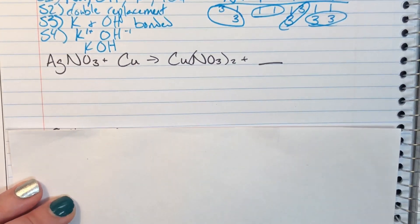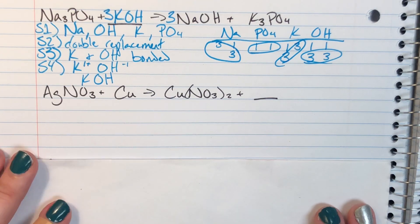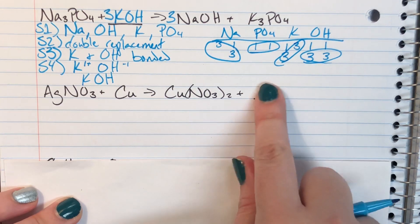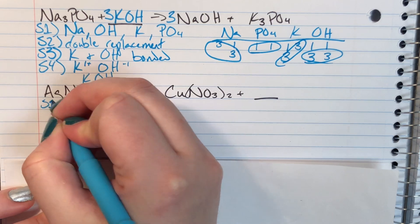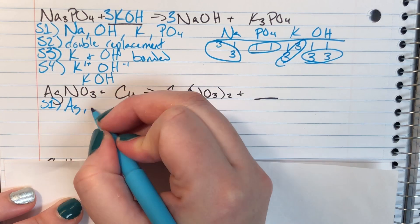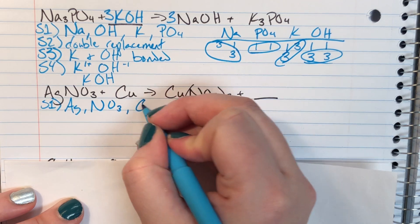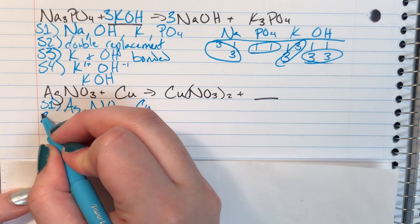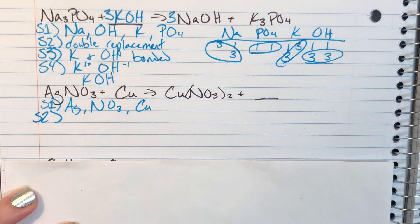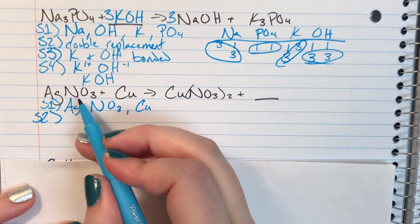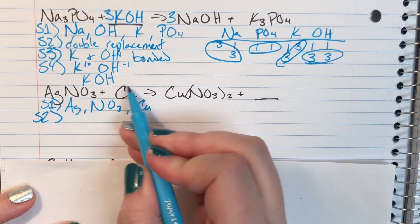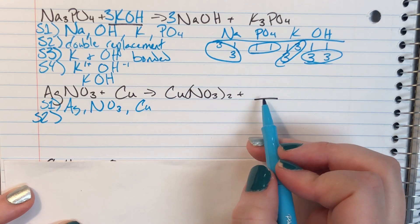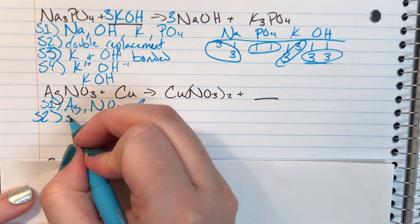The next problem: silver nitrate is added to copper, forming copper(II) nitrate and something unknown. Step one — identifying what is present: I have silver, the polyatomic ion nitrate, and copper. Step two — identifying the reaction type: I have a compound added to a single element producing a compound and something else. This looks like a single replacement reaction.